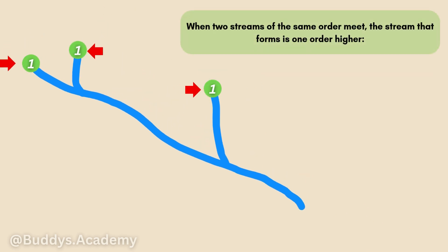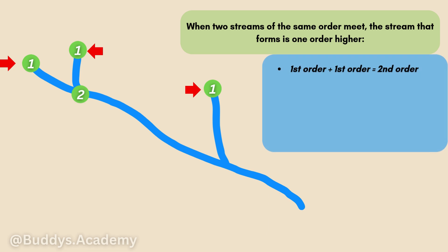Now, when two streams of the same order meet, the stream that forms will be one order higher. So if we take a first order stream plus another first order stream, the stream that's going to form is going to be a second order stream, as you can see in the diagram. Remember: first order plus first order results in a second order stream.